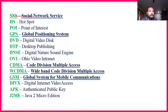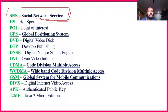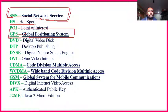SNS — Social Network Service — is the network used in a particular place in society. GPS — Global Positioning System — is very important. For example, when we search on mobile for where a restaurant is located, we use GPS to find its position. That is GPS — Global Positioning System.